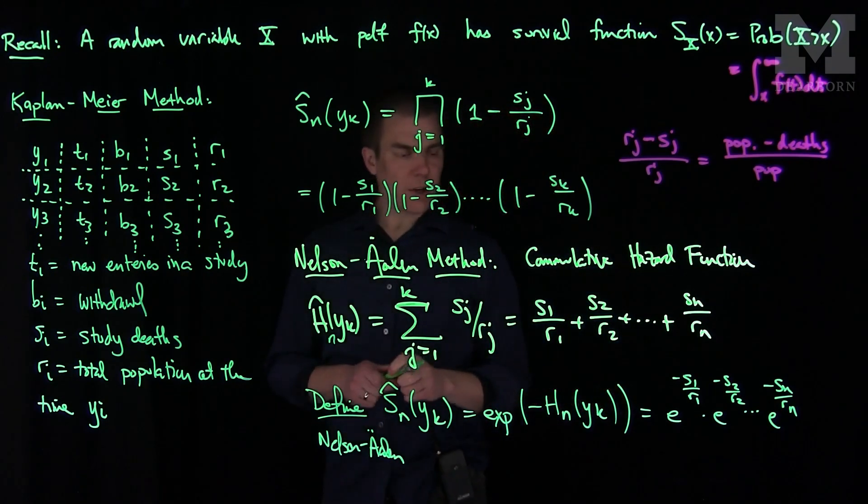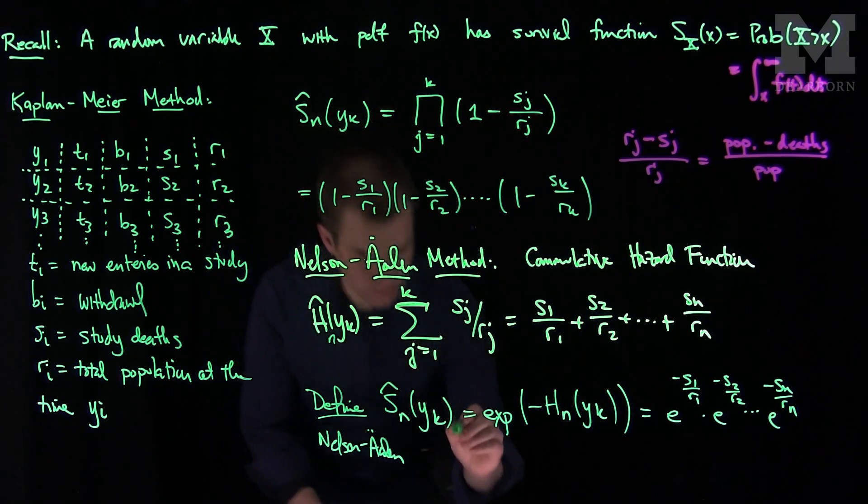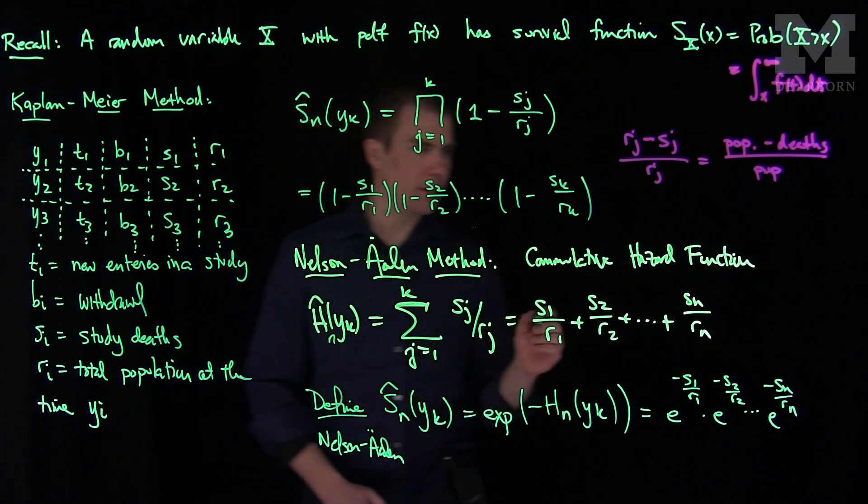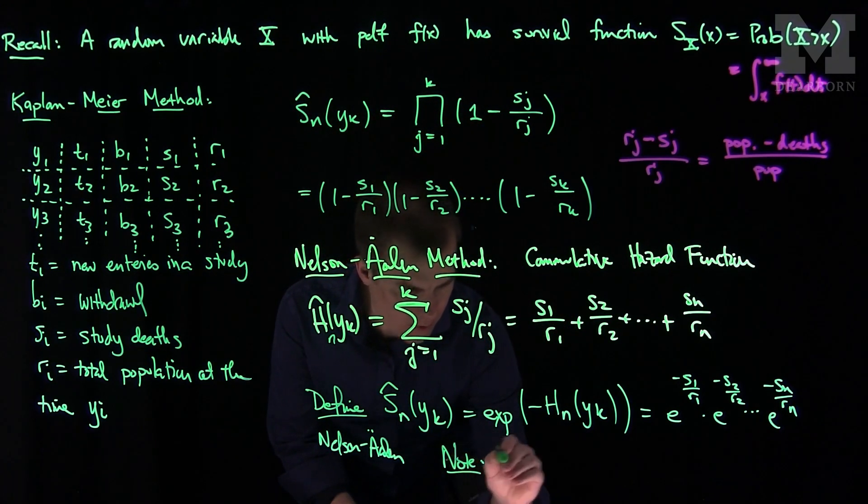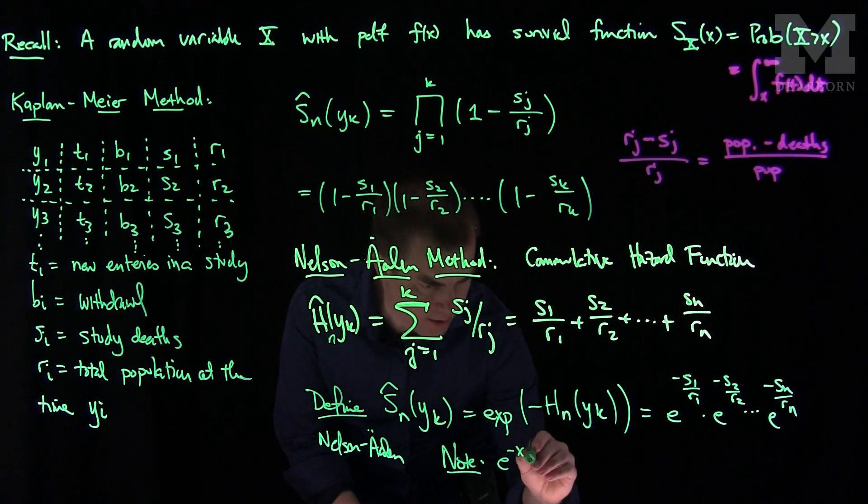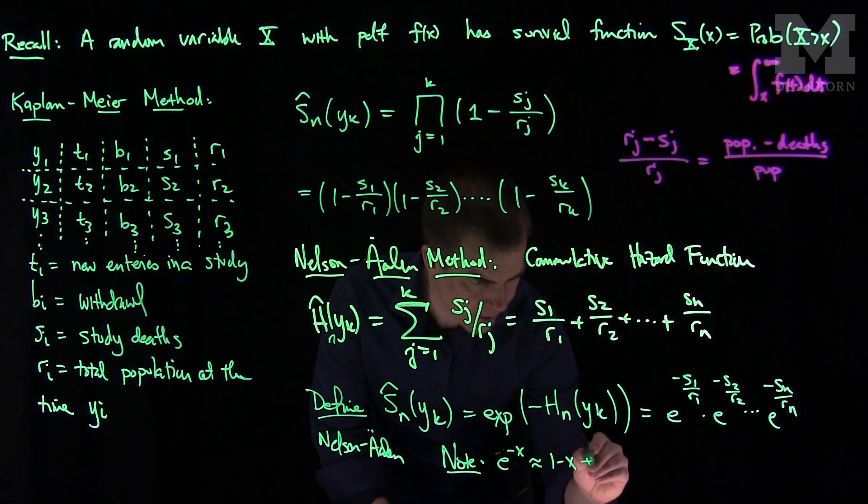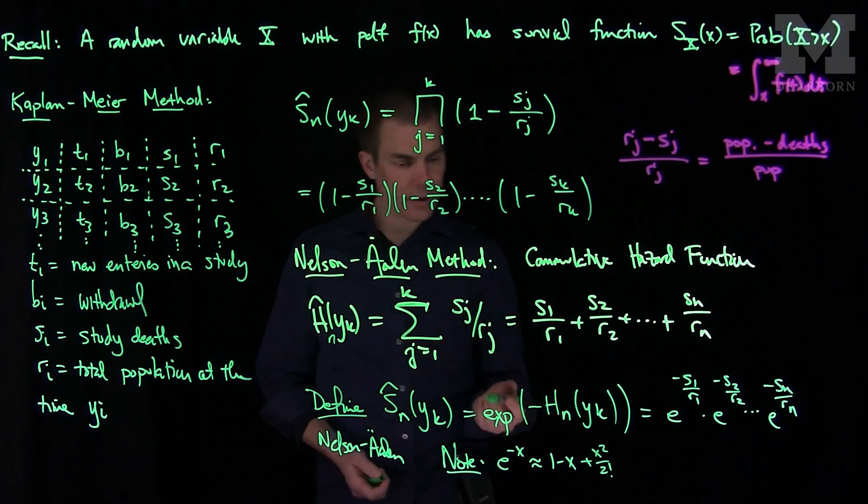And we know that each e^(-s), so note, a good note over here actually, note that e^(-x) is approximately 1 - x, and then the next term in the Taylor expansion will be plus x²/2!, so this is the Taylor expansion.